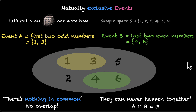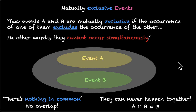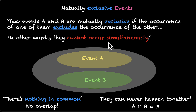Now that we understand what mutually exclusive events are, let's look at the formal definition. For two events A and B, we can say that they're mutually exclusive if the occurrence of one of them excludes the occurrence of the other, which means that they cannot occur simultaneously. In the image, you can see that event A and event B have no overlap — they can never happen together.